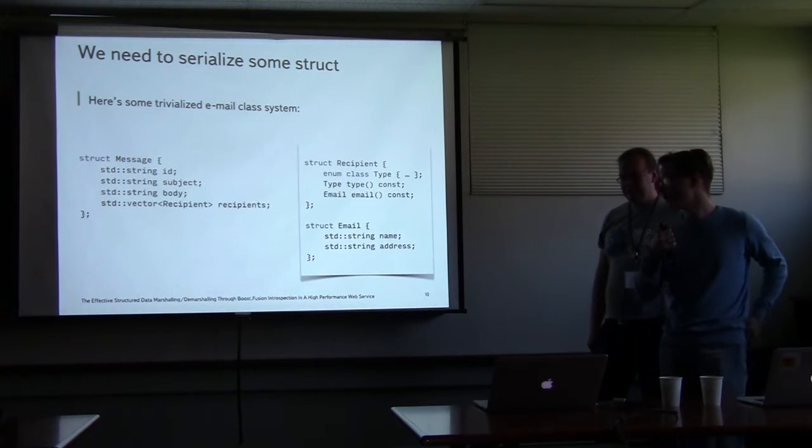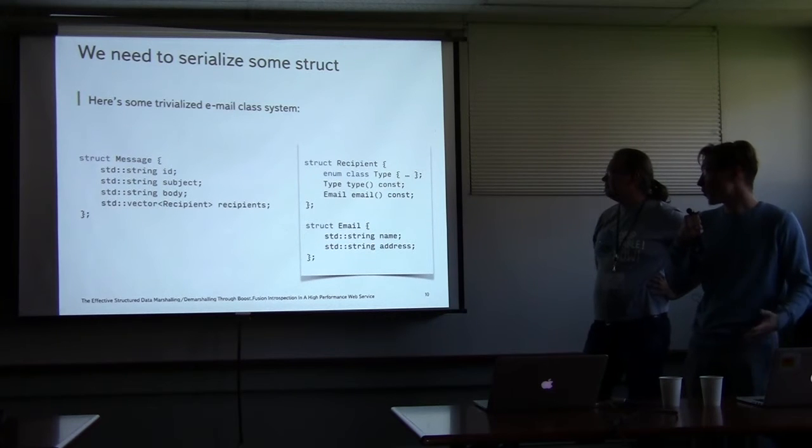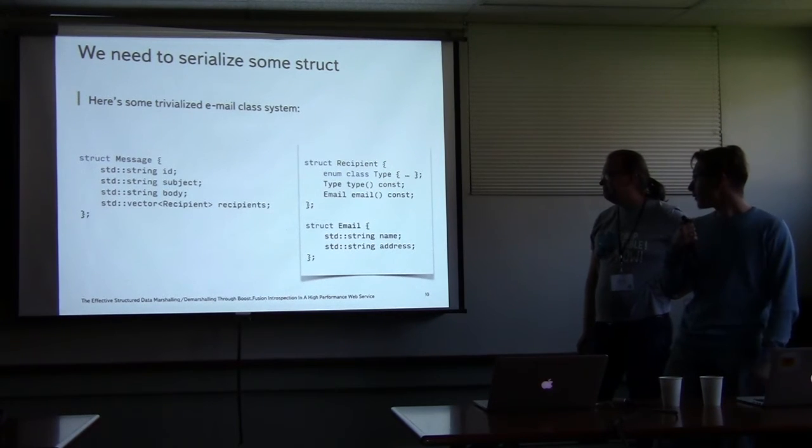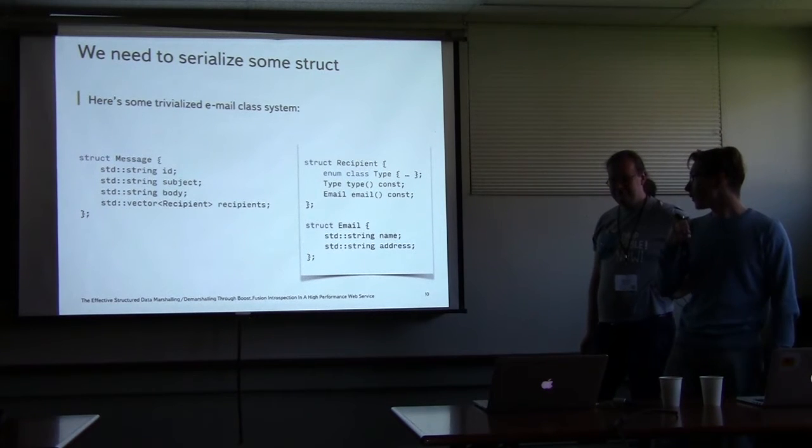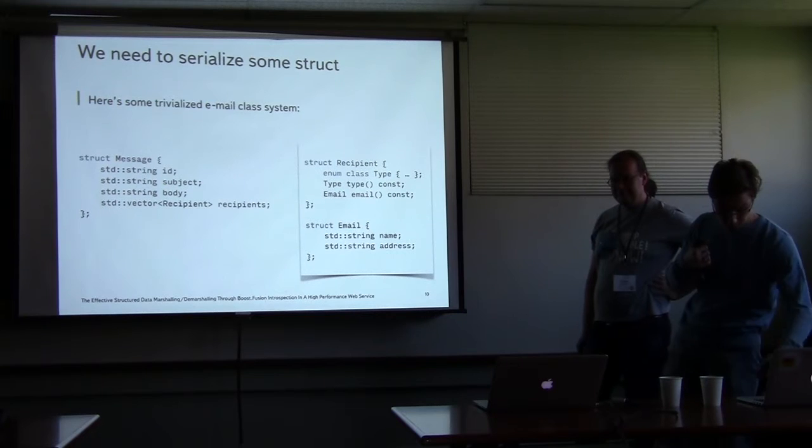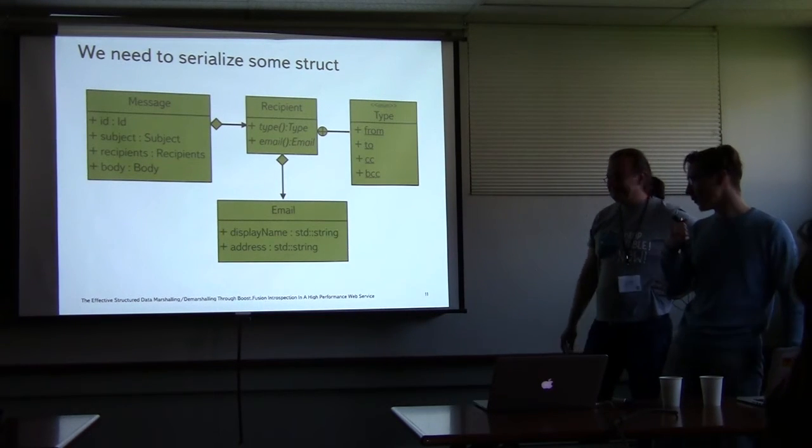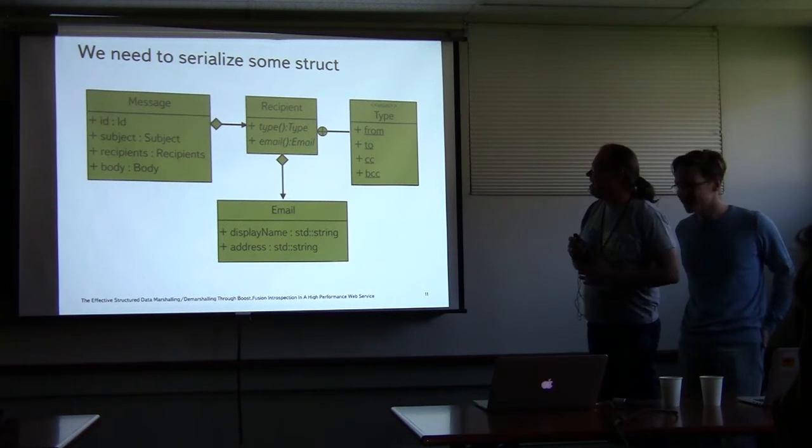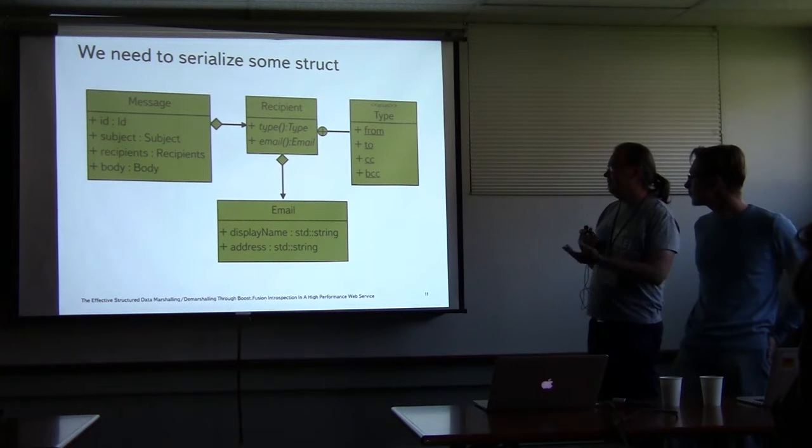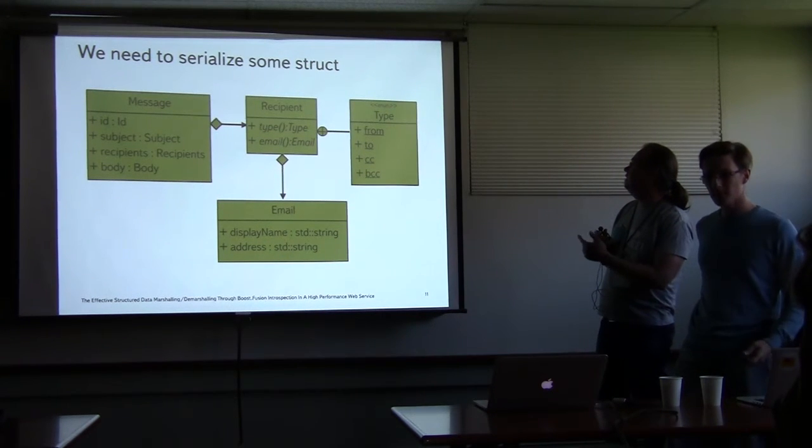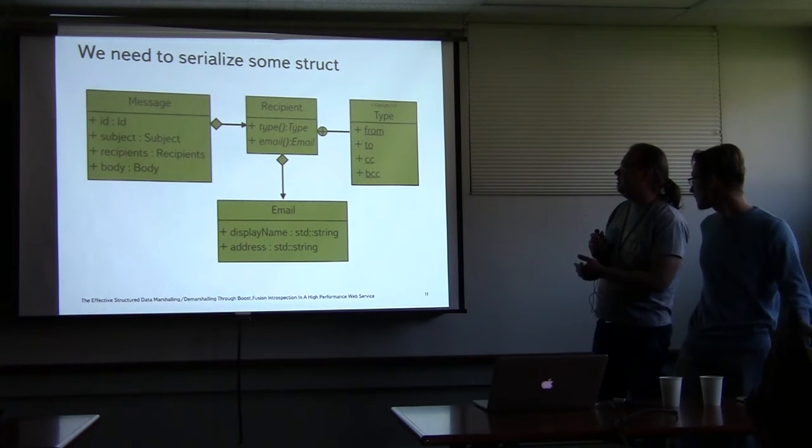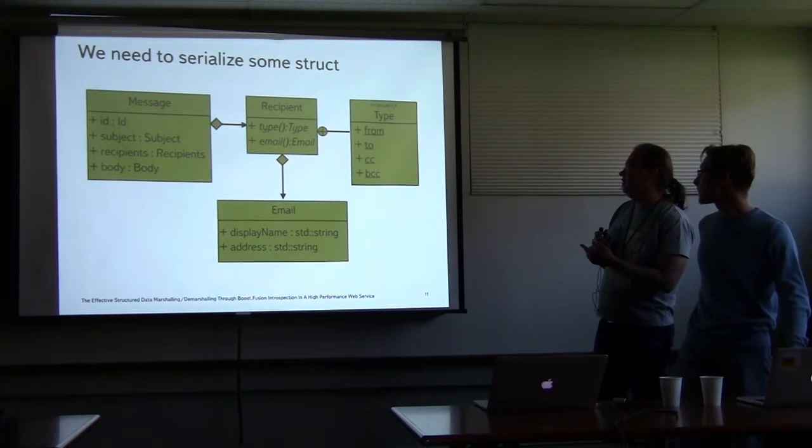Let's look at some examples. We have some simple structure system that represents some dummy mail service. Here we have message that represents your email, which consists of some strings and a container of another structure which, just for fun, are represented via setter-getter protocols. This is a presentation of the previous slide but in a diagram manner. Here is a message, here is a recipient. The recipient has some type described with some YAML, and it contains email with display name and address. Message has ID, some subject, recipients, and the body.